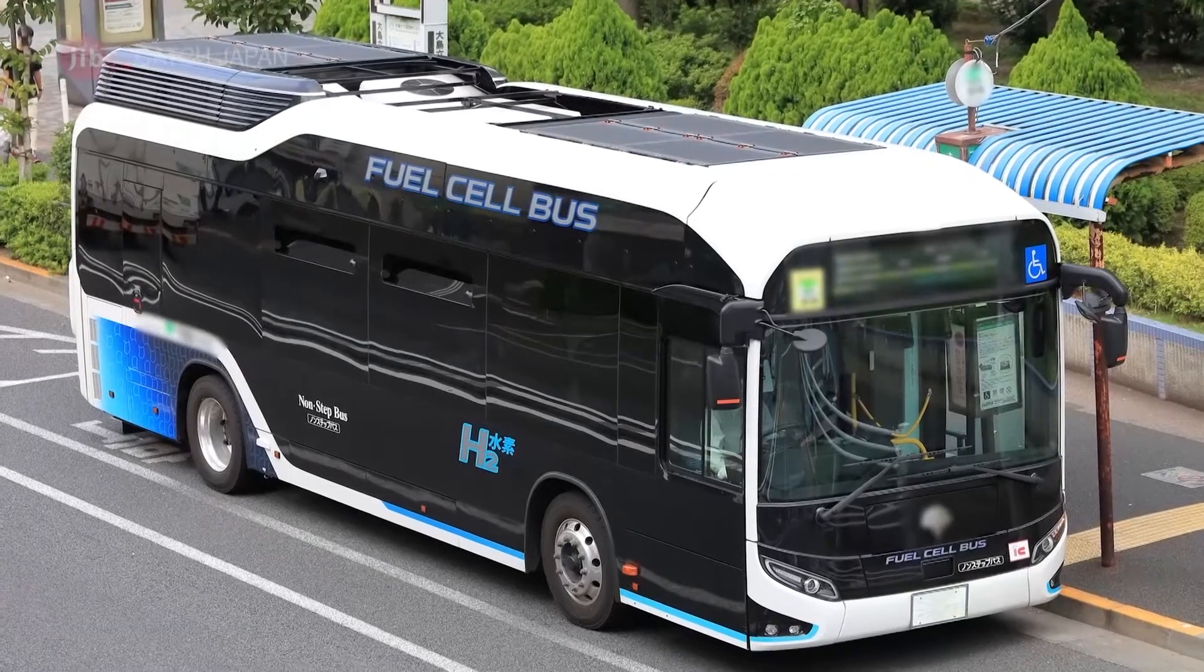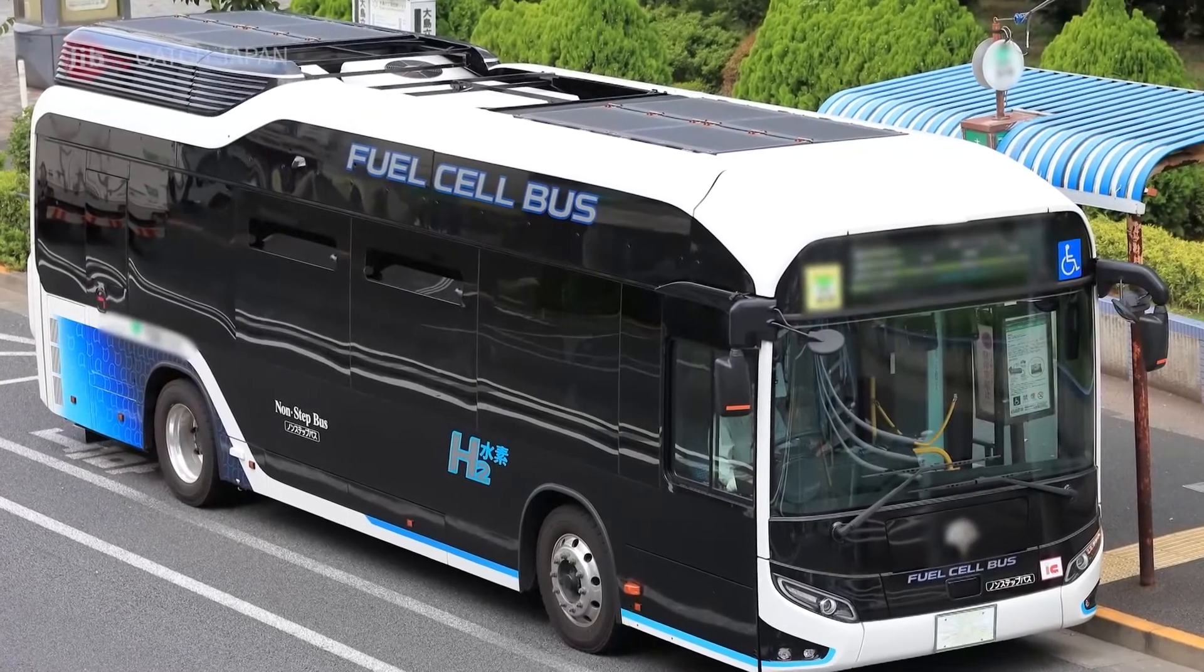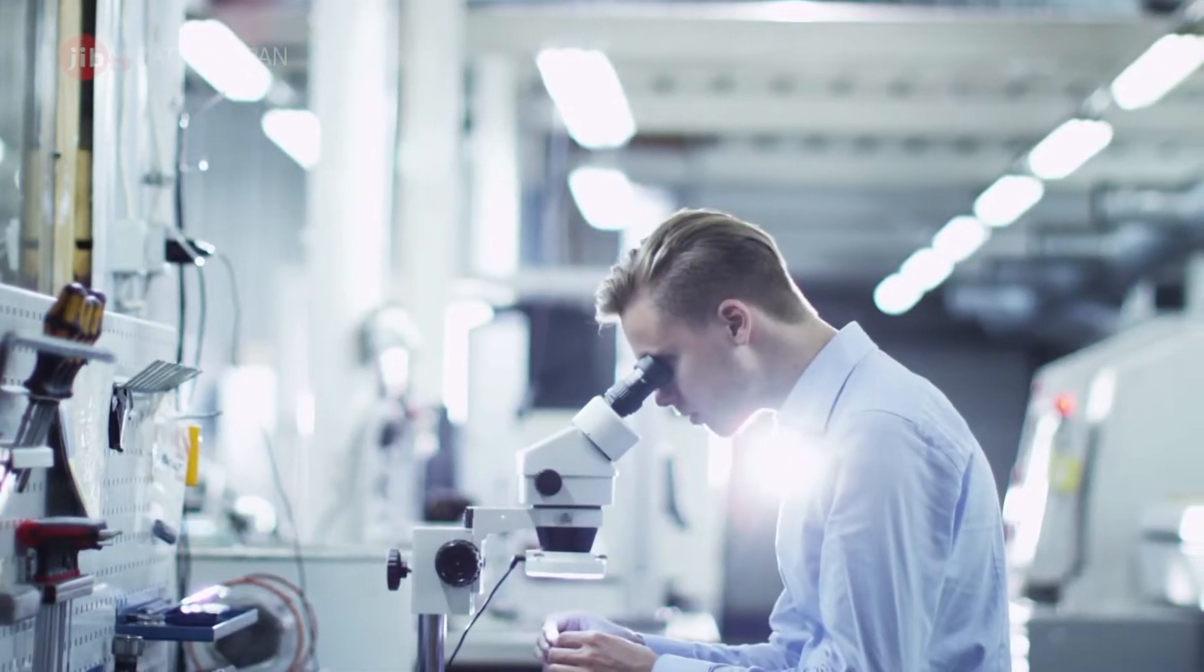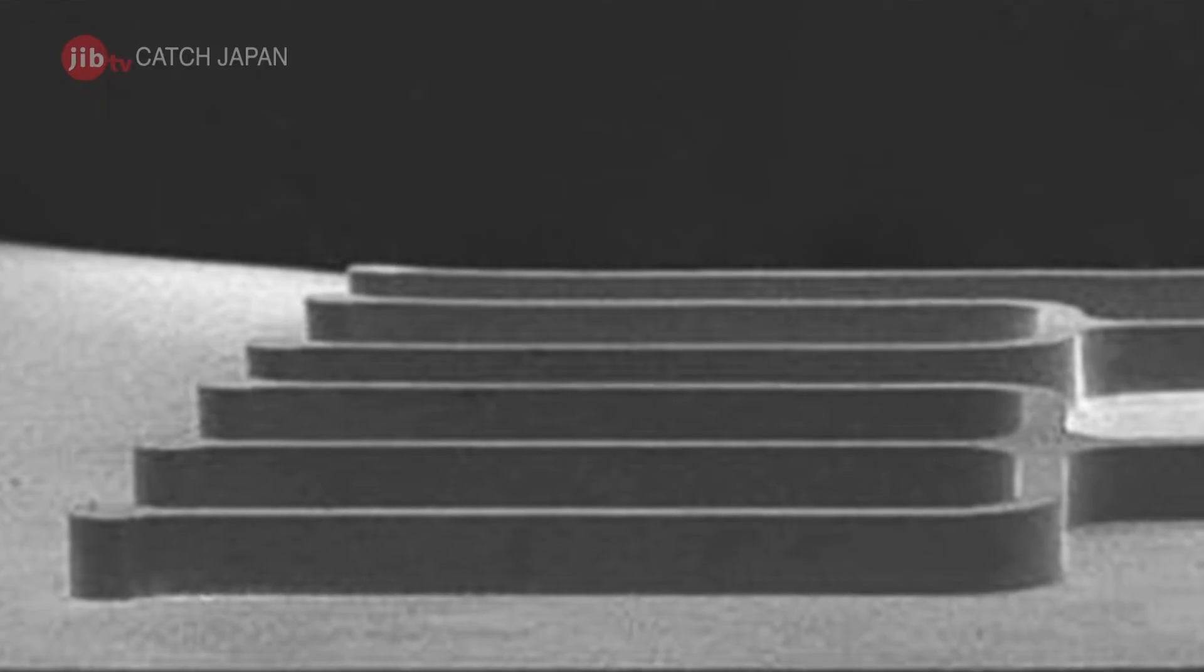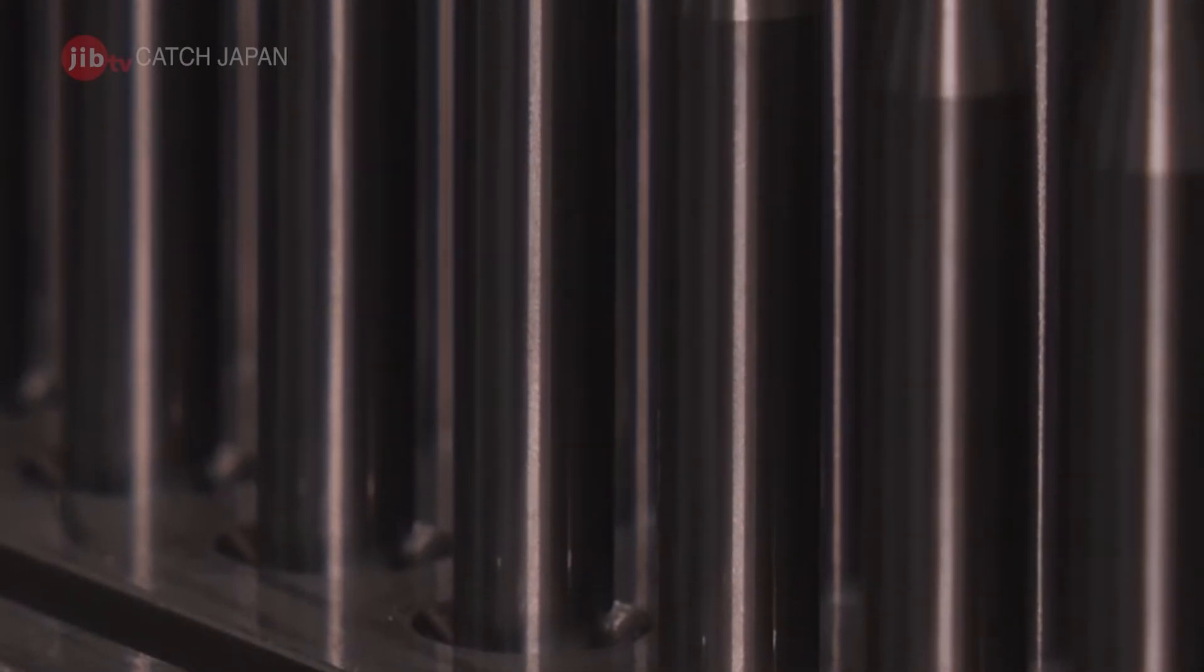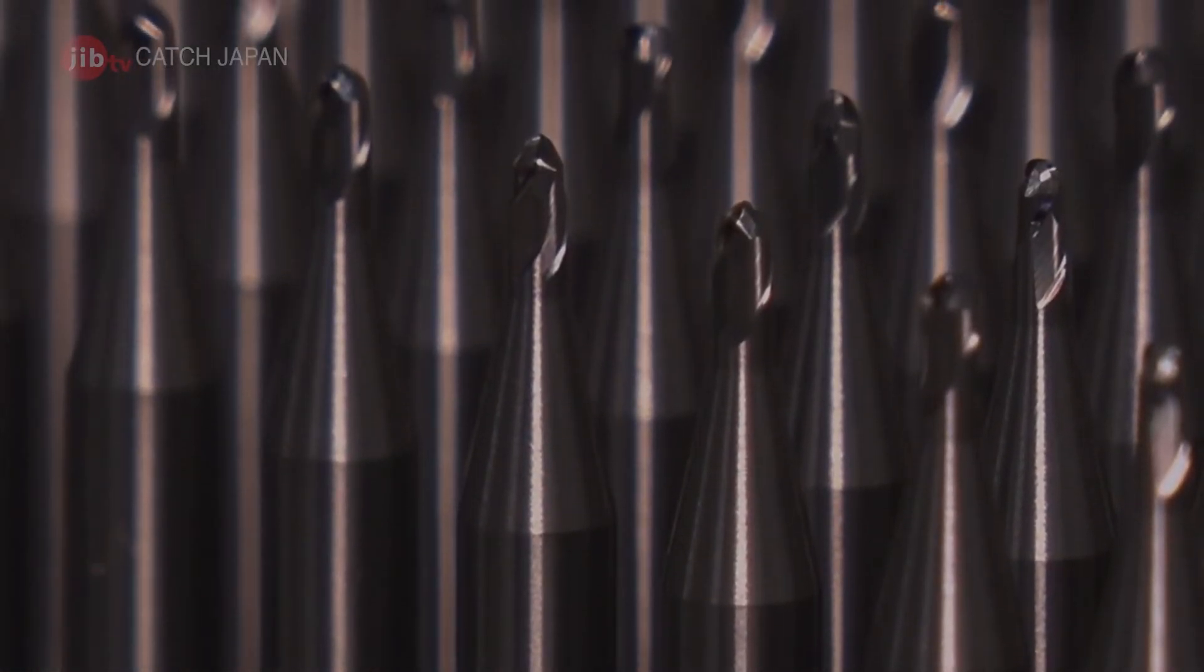These small diameter end mills are indispensable in various fields that are expected to become widespread in the future, such as fuel cell vehicles and molds for manufacturing components used in the development of new drugs. End mills continue to ring in the future by making advancements in our lives possible, even if we don't notice their contributions.